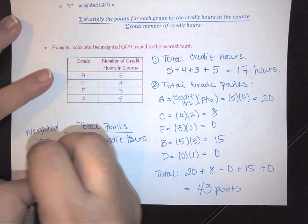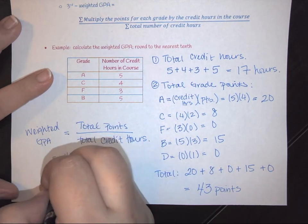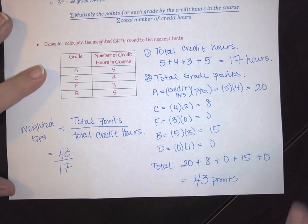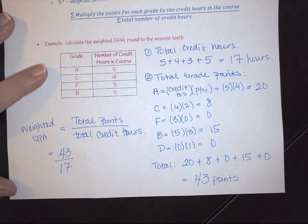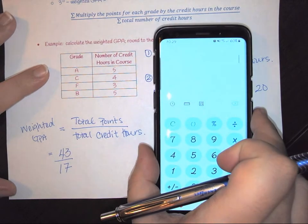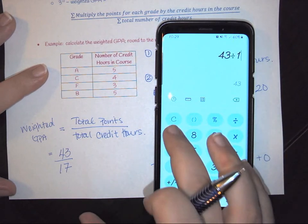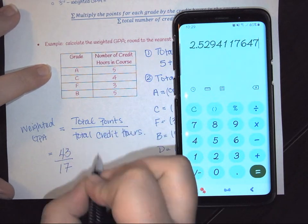So in this case, my total points was 43, my total credit hours was 17. So I would go ahead and use your four function calculator. So here we've got my total points of 43 divided by my credit hours of 17.